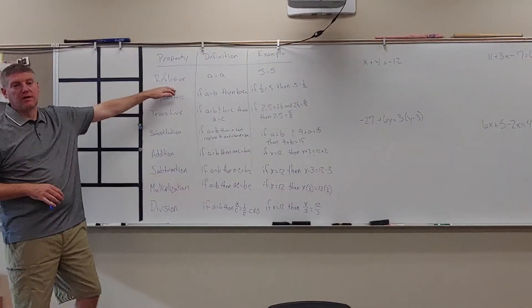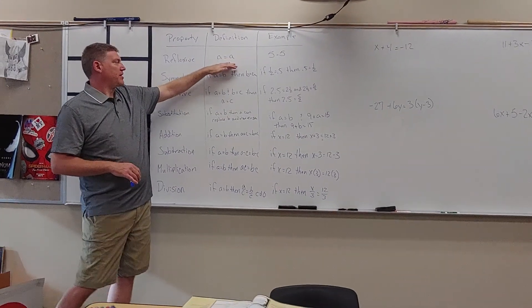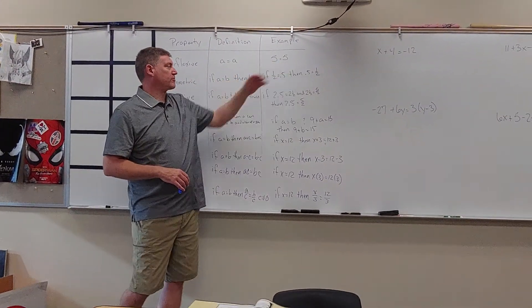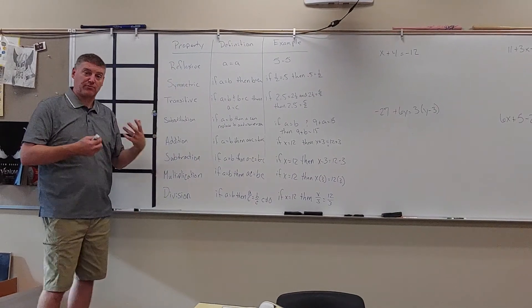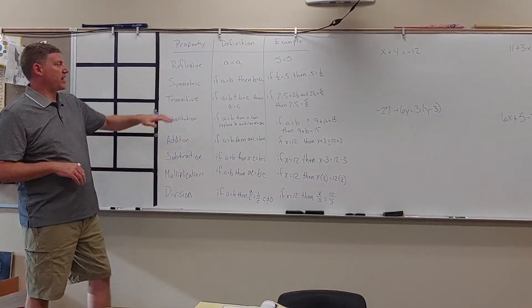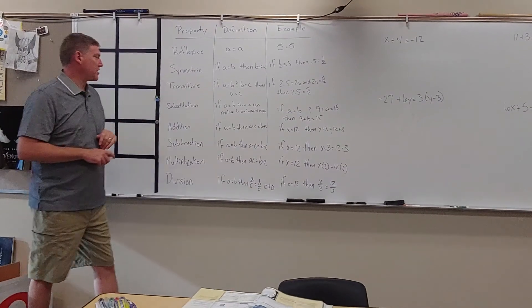The first one is reflexive. Reflexive is A equals A. Our example is 5 equals 5. I kind of think of that as like a reflection, so that helps me remember it's the same thing.